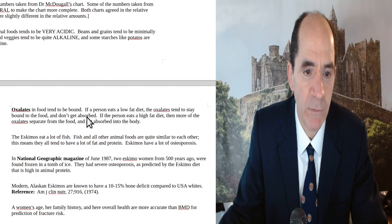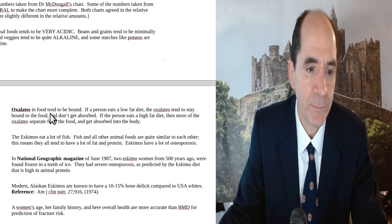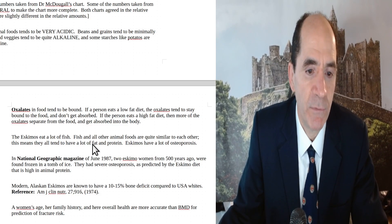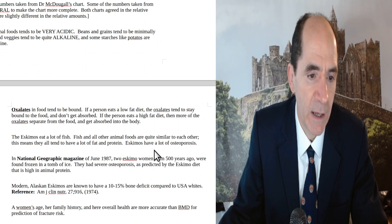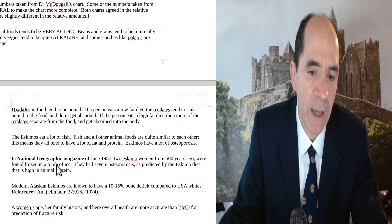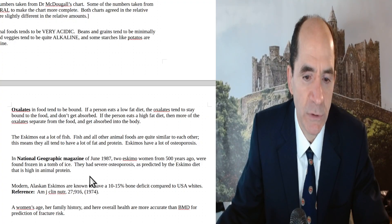Oxalates in food tend to be bound. If a person eats a low-fat diet, the oxalates tend to stay bound to food and don't get absorbed. However, if a person eats a high-fat diet, then more of the oxalates separate from the food and get absorbed into the body. The Eskimos eat a lot of fish. The fish and other animal foods tend to have a lot of fat and protein. They get a lot of osteoporosis. In National Geographic magazine June 1987, two Eskimo women from 500 years ago were found frozen in a tomb of ice. They had severe osteoporosis, as predicted by the Eskimo diet, which is very high in protein. Modern Alaskan Eskimos are known to have a 10 to 15 percent bone deficit compared to USA whites.